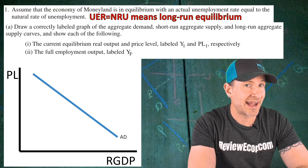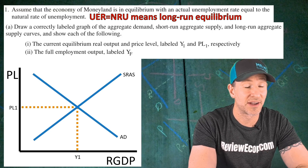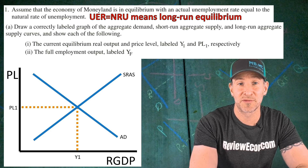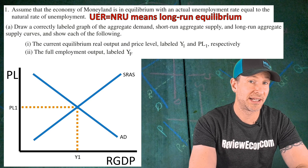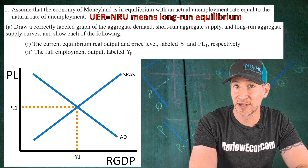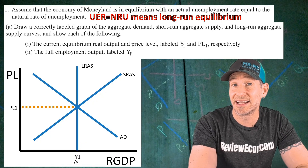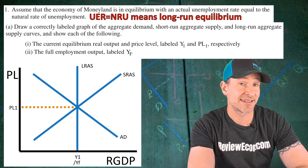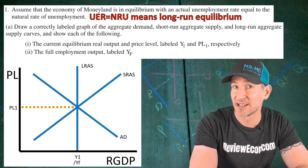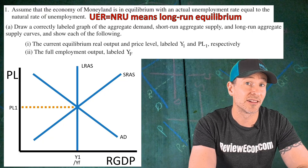Start drawing the graph with real GDP on the x-axis, price level on the y-axis, a downward sloping aggregate demand curve, and an upward sloping short-run aggregate supply curve. At the intersection we find price level PL1 and equilibrium real output Y1 — that gets your first point. For the second point, add the long-run aggregate supply curve at the intersection of SRAS and AD, and mark YF below it. The fact that YF and Y1 are equal shows they are at long-run equilibrium.